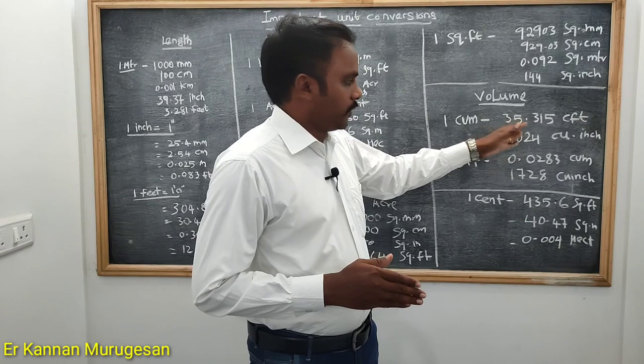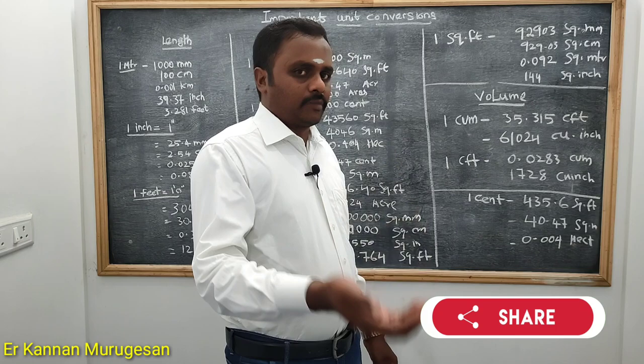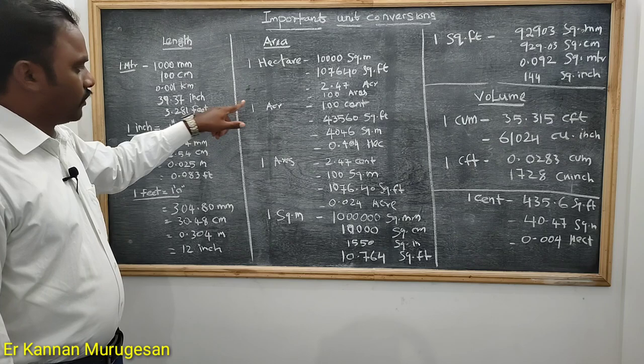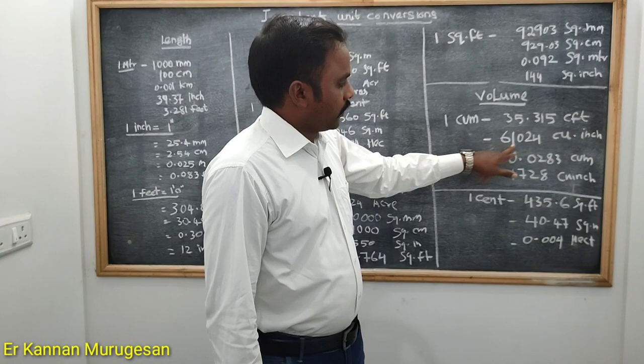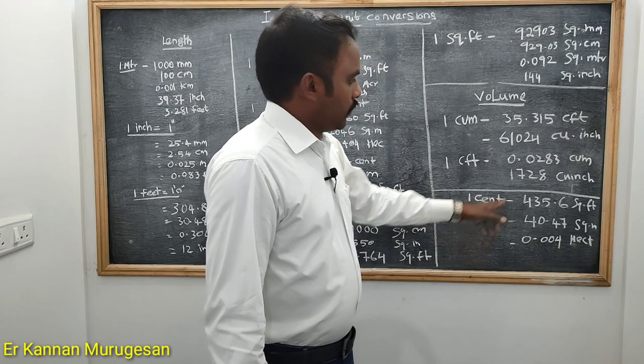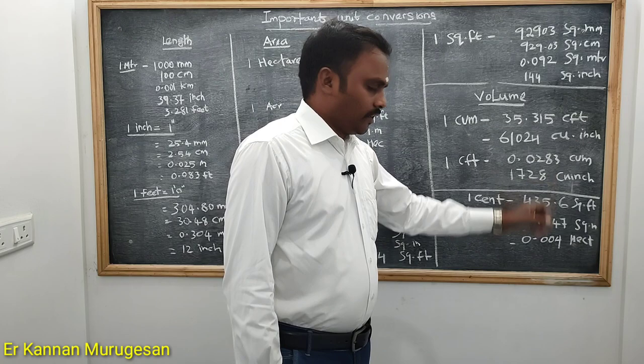If we use the MQ in feet, we use 35.315. It is 35.315, where we use 3.28 and 3.28. 35.315 cubic feet per cubic meter. 1 CFD is 0.0283 cubic meter and 1728 cubic inches. It is very easy to use if you use a meter or a feet.